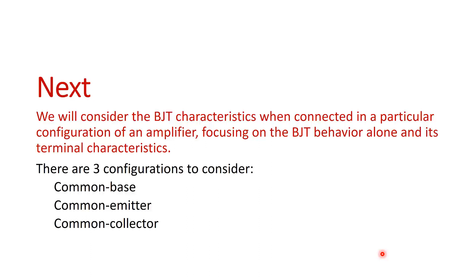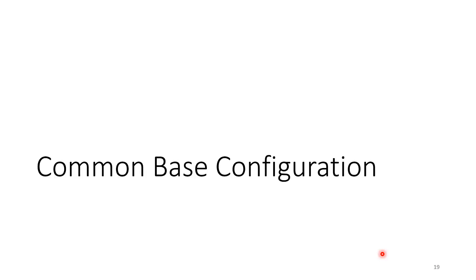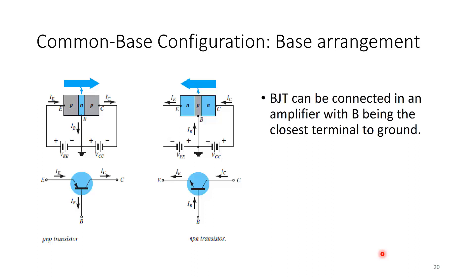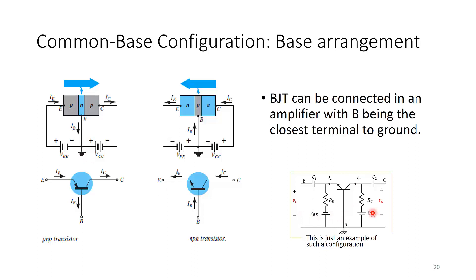Next we consider BJT characteristics when connected in a particular amplifier configuration. The BJT can be connected in common base, common emitter, or common collector configuration. In common base configuration, the base terminal is closest to ground. The emitter is connected to the input signal and the collector to the output. The base is the common terminal to both input and output connections.